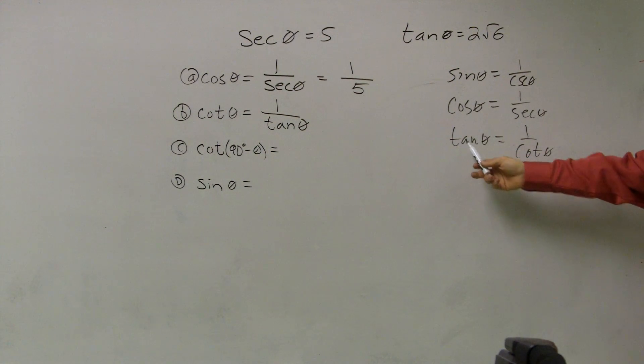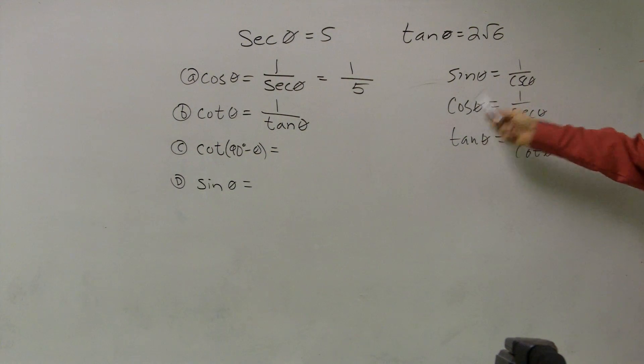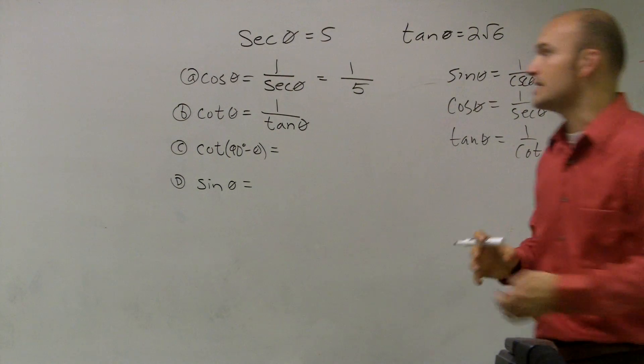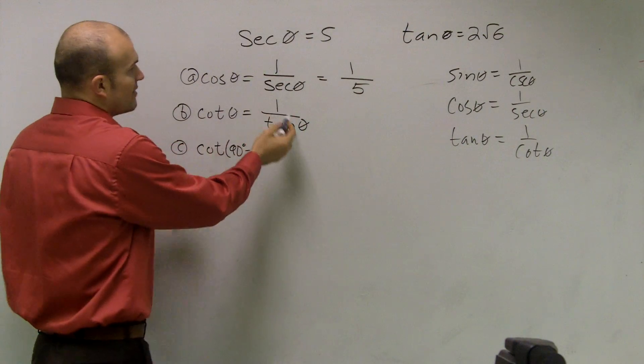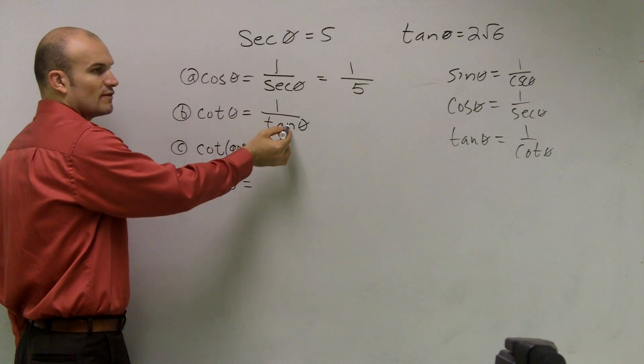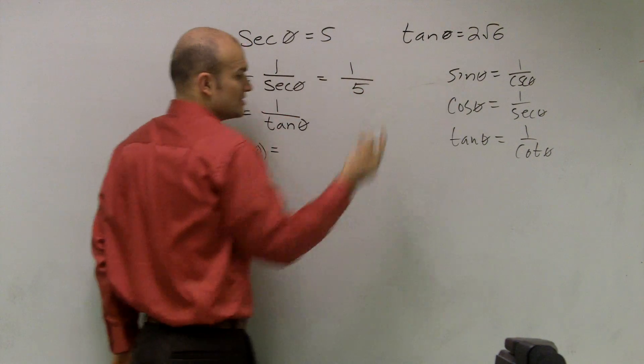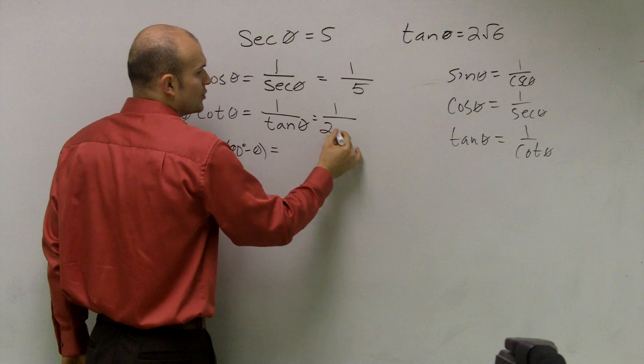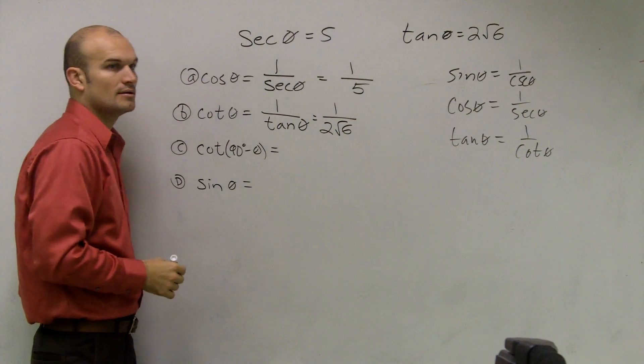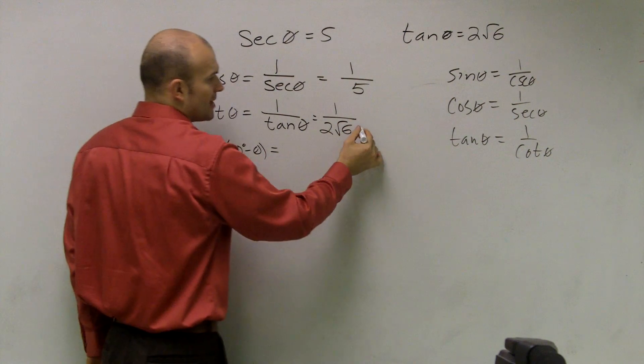And that can work the same way. You can say cotangent is 1 over tangent, secant is 1 over cosine, cosecant is 1 over sine. That works both ways. They're reciprocals of each other. Those are in those boxes that are really important for you guys to have written down. So if I know that cotangent is just 1 over tangent, I'm given tangent, so I just write 1 over 2 radical 6.